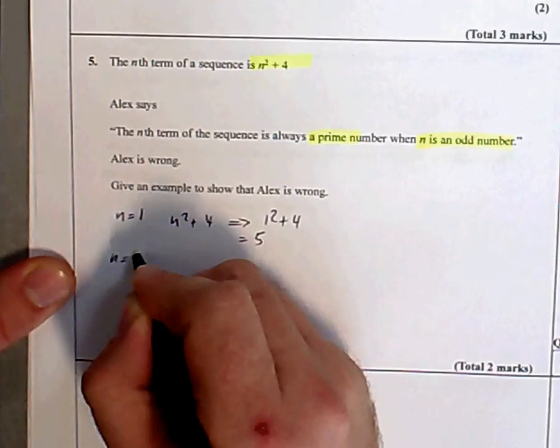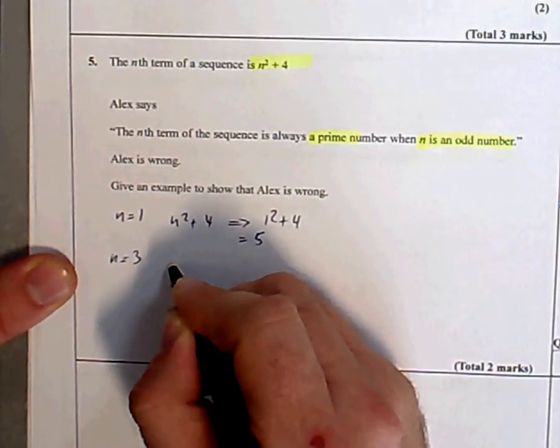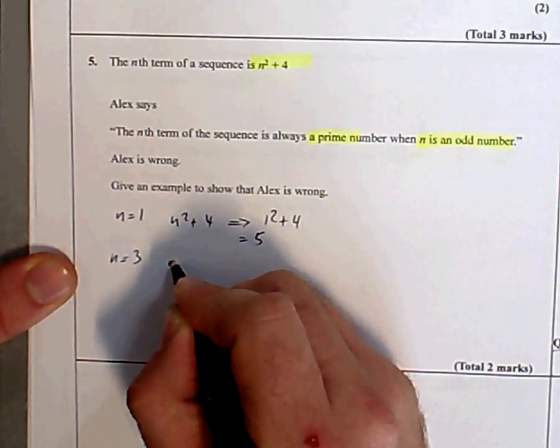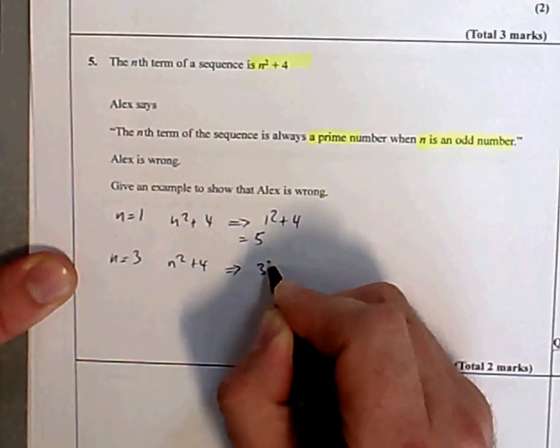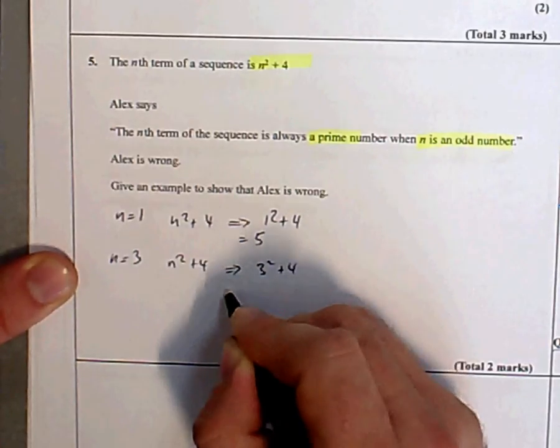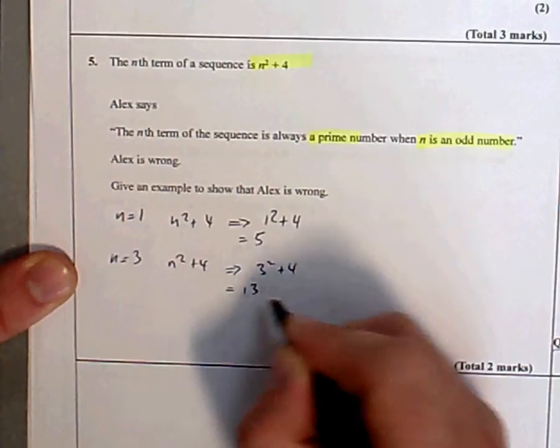So n equals 3. n squared plus 4. We're going to go with 3 squared plus 4. 3 squared is 9, 9 plus 4 is 13. Still haven't done it. Keep going.